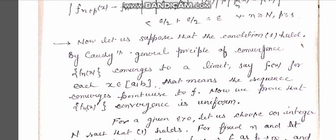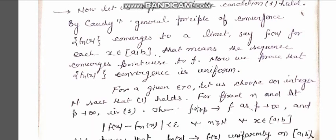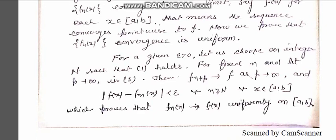Now we will prove that f_n(x) converges uniformly. For this, let epsilon be greater than 0 and choose an integer capital N such that condition one holds. Now for a fixed n and letting p tend to infinity, in condition one we have f_{n+p} tending to f(x) as p tends to infinity.